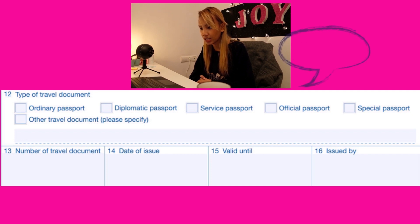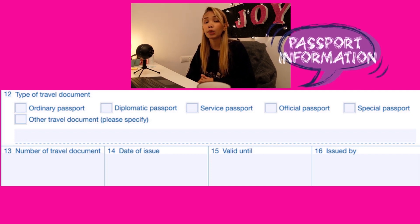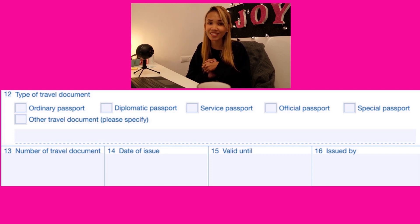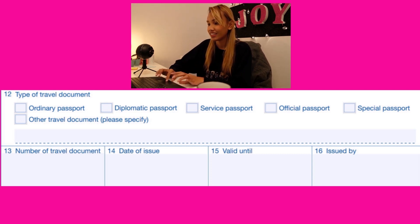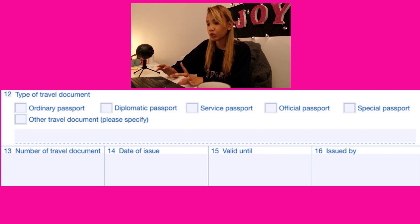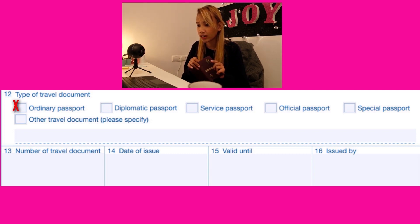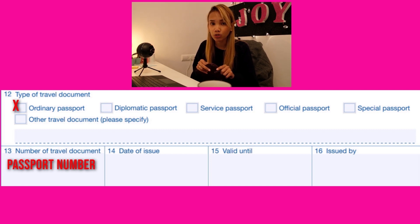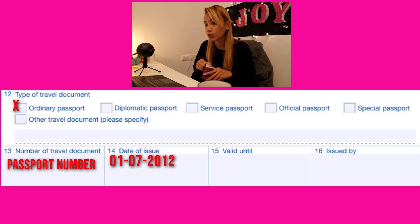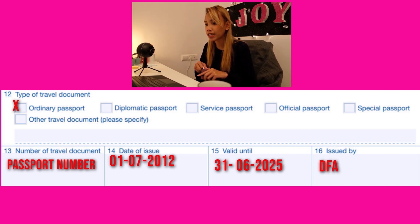For numbers twelve to sixteen, this will be your passport details. Make sure you already have a passport — you cannot apply for a Schengen visa without one. Number twelve is the type of travel document or the type of passport you have. The passport most of us have is just an ordinary passport. You will also enter your passport number, date of issue, and number sixteen is where you applied for the passport.